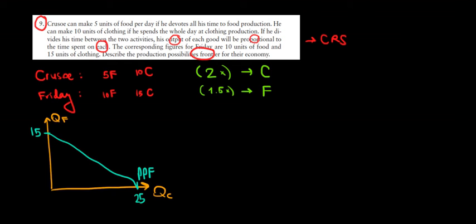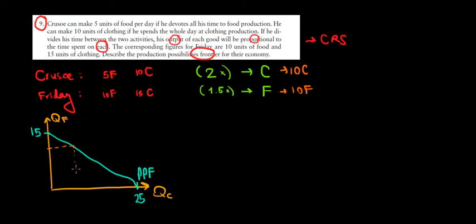If they focus on their comparative advantages and spend all their time respectively on clothing and food, Cruso would make 10 units of clothing and Friday would make 10 units of food. The optimal point on the production possibilities frontier is therefore 10 units of food and 10 units of clothing, which sits somewhere in the middle of our PPF line. That's the answer.